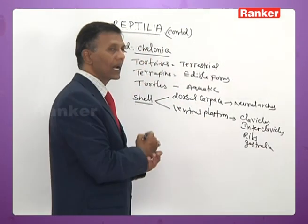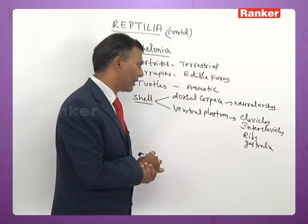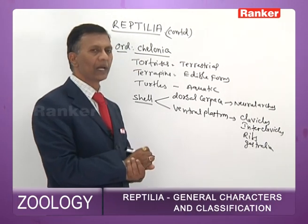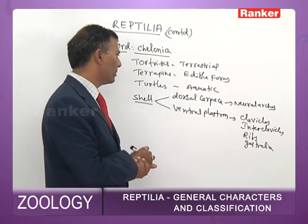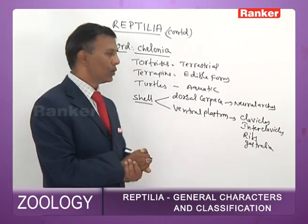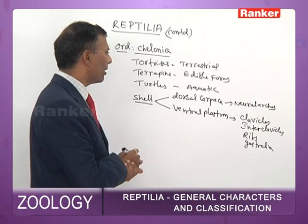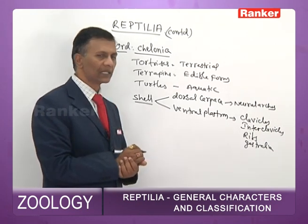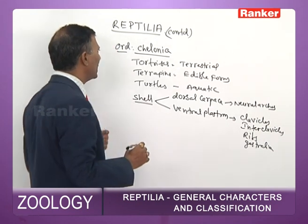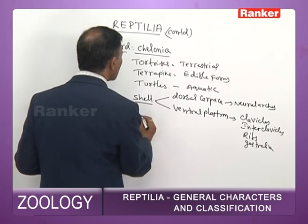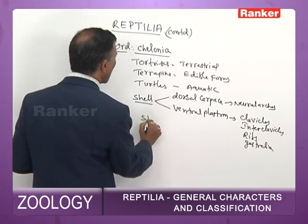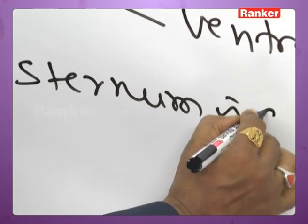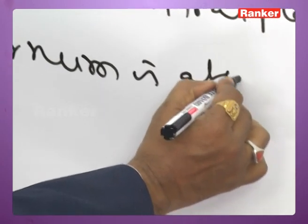The plastron is formed by fusion of clavicles, interclavicles, gastralia (abdominal ribs), and ribs. Because the clavicles, interclavicles, and ribs are involved in forming the plastron, the sternum is absent in Chelonians.